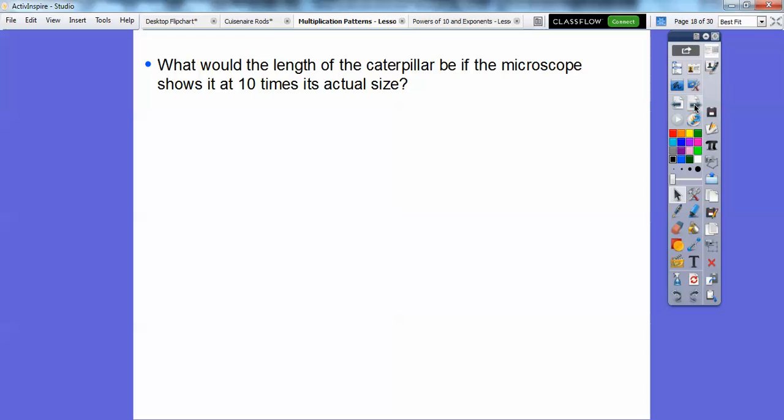What would be the length of the caterpillar if the microscope shows it at 10 times its actual size? Well, that would be 70 times 10, and 7 times 1 is 7, and we'd add that 0 and that 0, which is 700. It would be about 700 millimeters, and that's a bit over 2 feet.